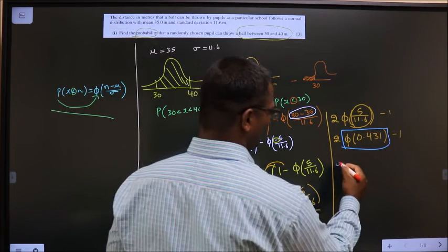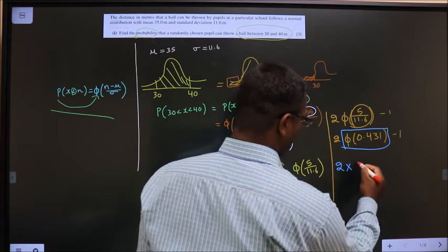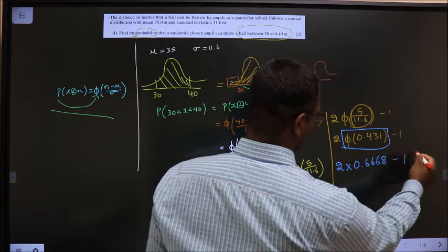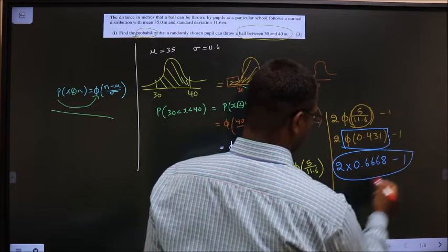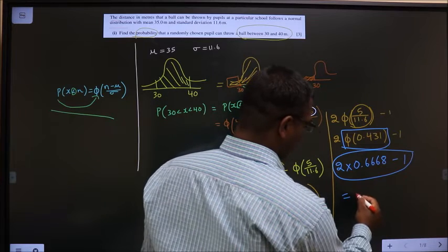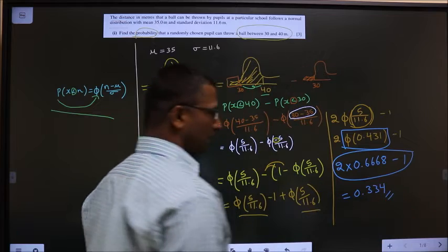So, this value you should get it to be 0.6668 minus 1. Now, put this entire thing in the calculator. You get the answer to be 0.334 is our answer.